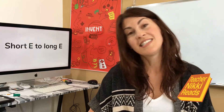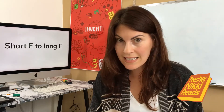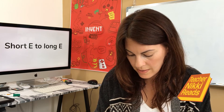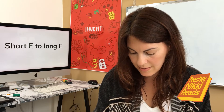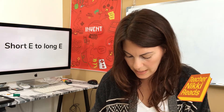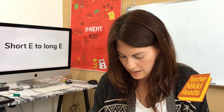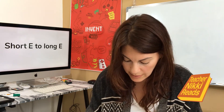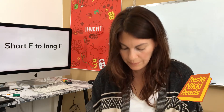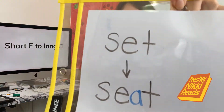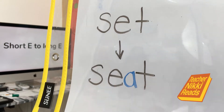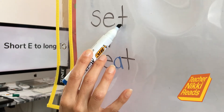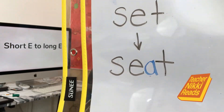How about set to seat? Set. And now I'm going to add an A — I'll put the A in blue so you can see that I added it in there. Set to seat. I added an A right after this E. Set to seat.